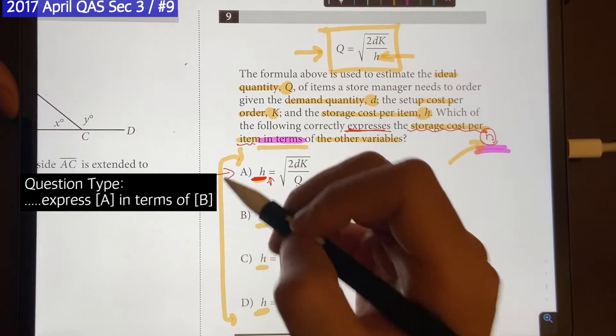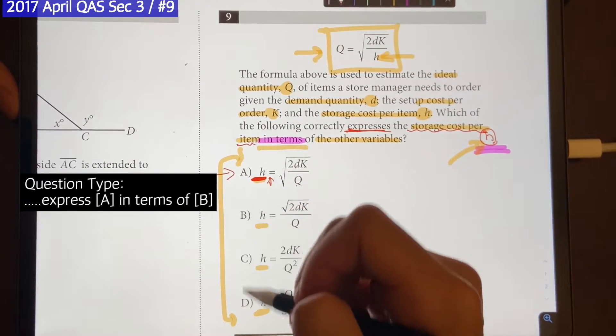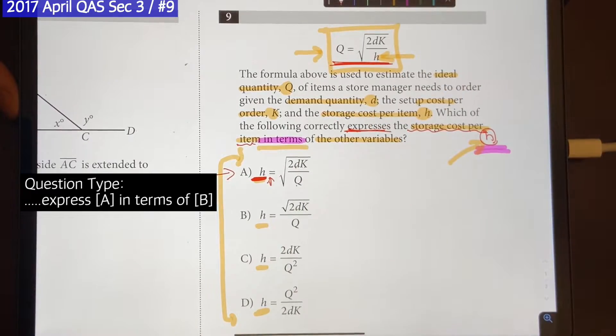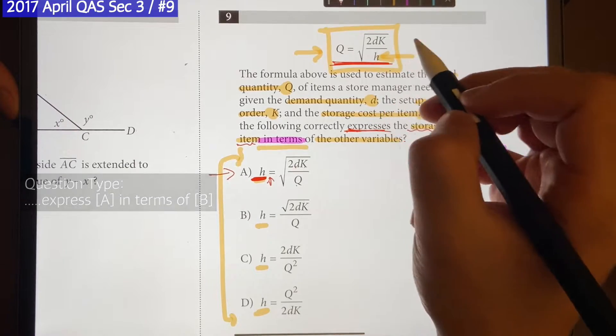So for these questions, our job is to identify the correct equation from A, B, C, and D. We can do so by rearranging this equation that they gave us. So we have this H right here, and let's isolate it.